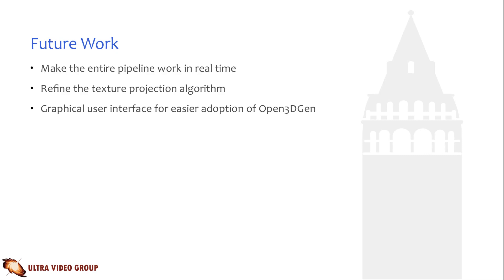Before the demo, I will briefly discuss the future prospects of Open3D Gen. The main goal is to make the entire software run in real time. This includes refining the texture projection algorithm and making it faster to compute. A nice and user-friendly graphical user interface is also planned to make the adoption of Open3D Gen easier.